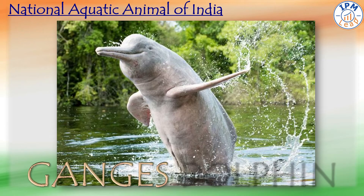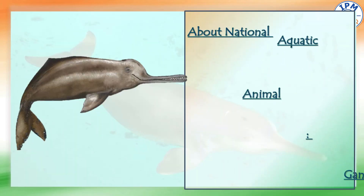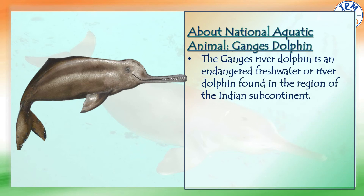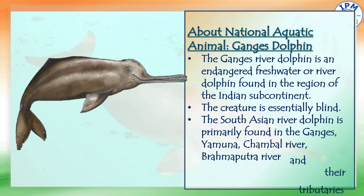Our national aquatic animal is the Ganges Dolphin. The Ganges River Dolphin is an endangered freshwater river dolphin found in the Indian subcontinent. The creature is essentially blind. The South Asian River Dolphin is primarily found in the Ganges, Yamuna, Chambal River, Brahmaputra River and their tributaries.